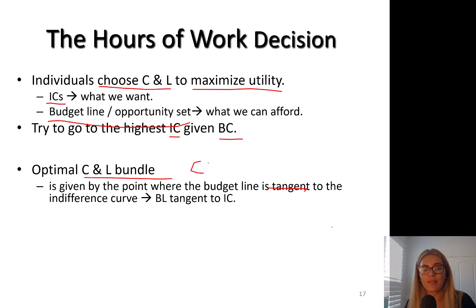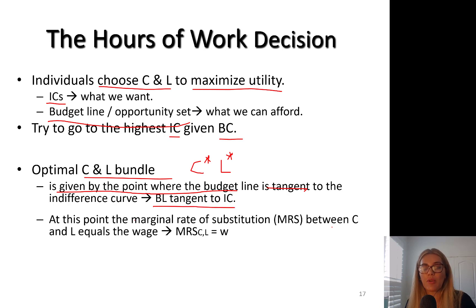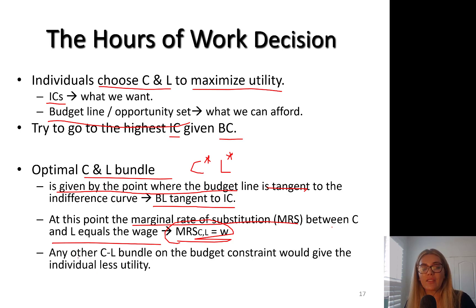Optimal consumption leisure bundle, C star L star, is given by the point where the budget line is tangent to the indifference curve. At this point, the marginal rate of substitution between consumption and leisure, which is the slope of the indifference curve, is exactly equal to the wage rate, which is the absolute value of the slope of the budget line. Any other consumption leisure bundle on budget constraint would give the individual less utility.